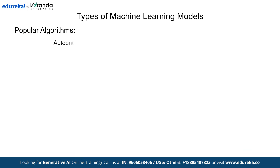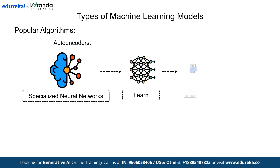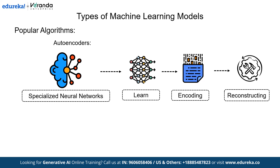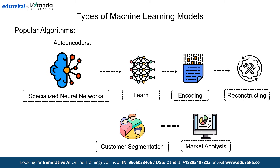Next we have autoencoders — specialized neural networks designed to learn efficient data representations by encoding and reconstructing input data. Two key examples: customer segmentation, where e-commerce platforms group customers based on shopping behavior to offer personalized recommendations; and market analysis, where businesses analyze purchasing trends to find associations, such as which products are frequently bought together.